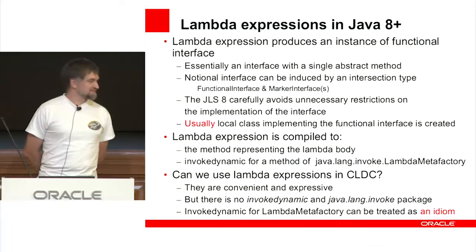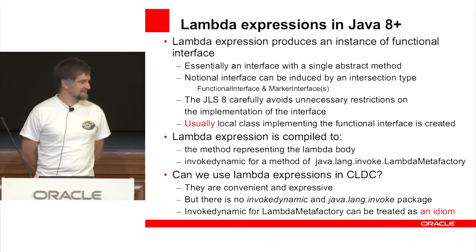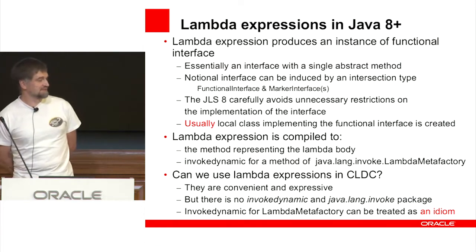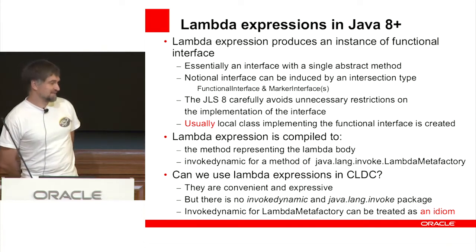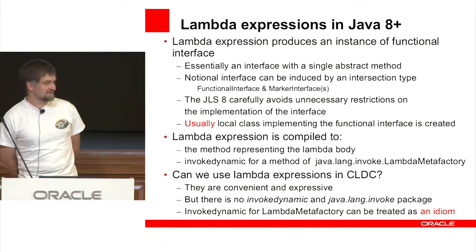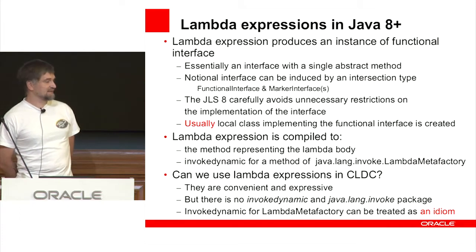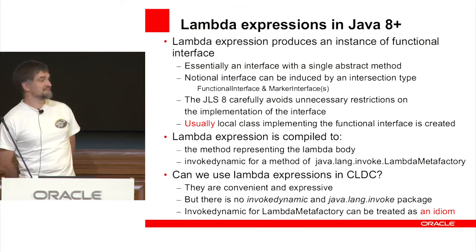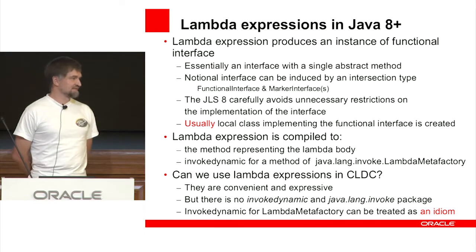You probably know everything about lambda expressions in Java 8 and later. But why do we want to use lambda expressions in CLDC if we don't have invokedynamic? Well, they're convenient and expressive, so we want to have them. Unfortunately, there is no invokedynamic and no java.lang.invoke package. But there is a trick: we can consider invokedynamic for the lambda metafactory as an idiom. That combination can have special meaning for the interpreter, and we're going to use this trick in implementing closures.